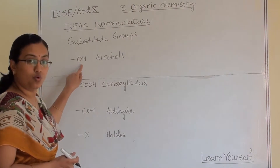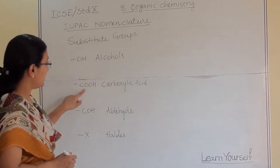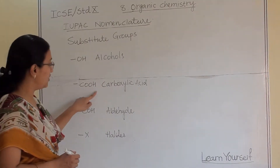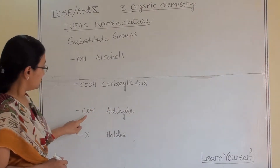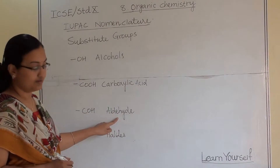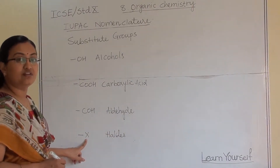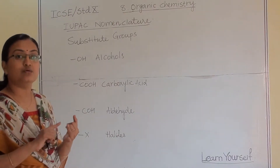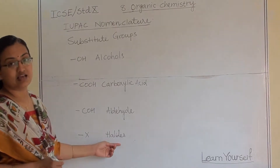The first one is OH, known as alcohols. The second is COOH, known as carboxylic acid. The third is CHO, which is aldehyde. And the last one, denoted as X, includes chloride, bromide, and iodide — they are known as halides.